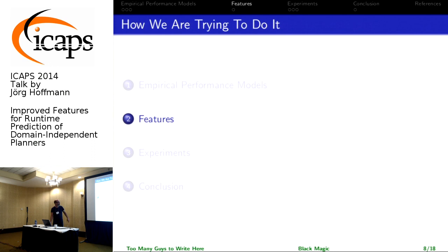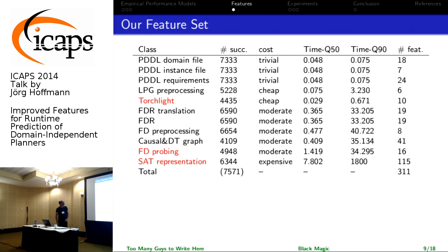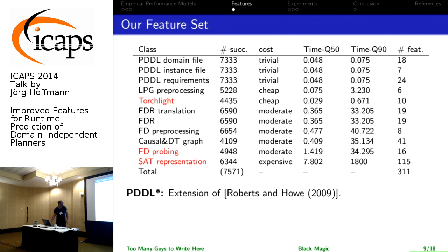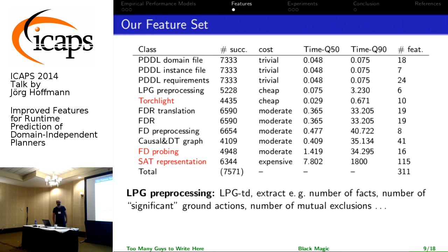So what are our features? Here's the table. The benchmark set contains 7,571 instances. This column is the number of instances in which the features could be extracted successfully. This here is a qualitative measurement of cost; the more quantitative one shows the median and the 90th percentile. The only really costly ones are the SAT-based features. PDDL features up front are like the previous stuff from Robertson and Howe, with some extensions. LPG preprocessing is just what the name suggests — some statistics on the mutexes and so forth.